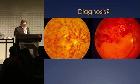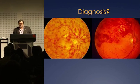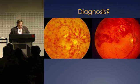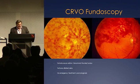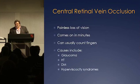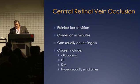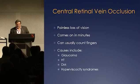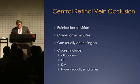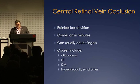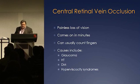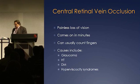So you're in a world of hurt when this happens and in many cases you're not going to be able to do too much. What's the diagnosis here? The blood and thunder fundus — the tomato sauce fundus. This is central retinal vein occlusion. This is painless loss of vision that comes on in minutes, not as suddenly as central retinal artery occlusion, and the causes can include glaucoma, hypertension, or diabetes.